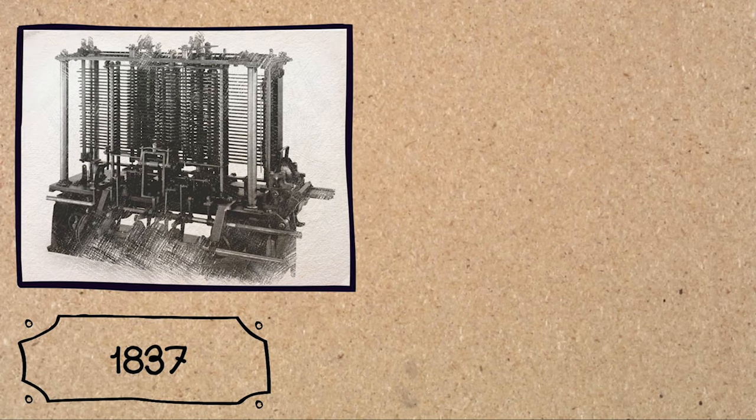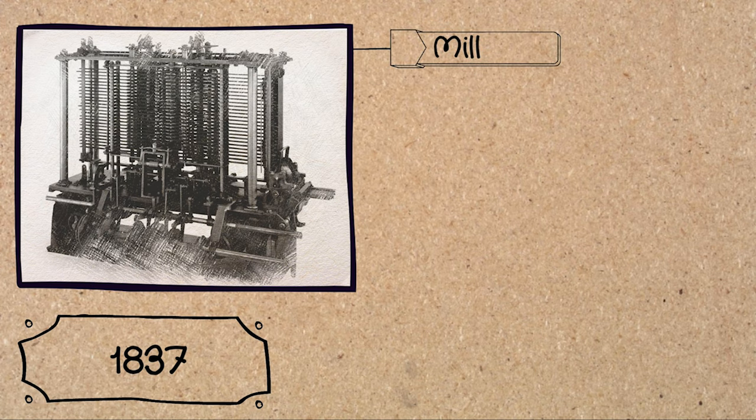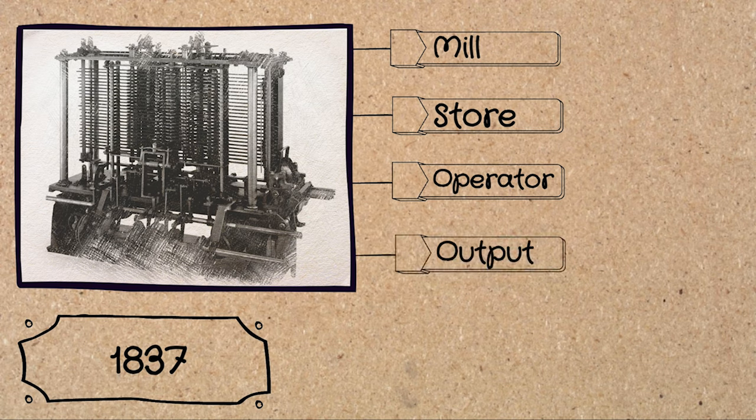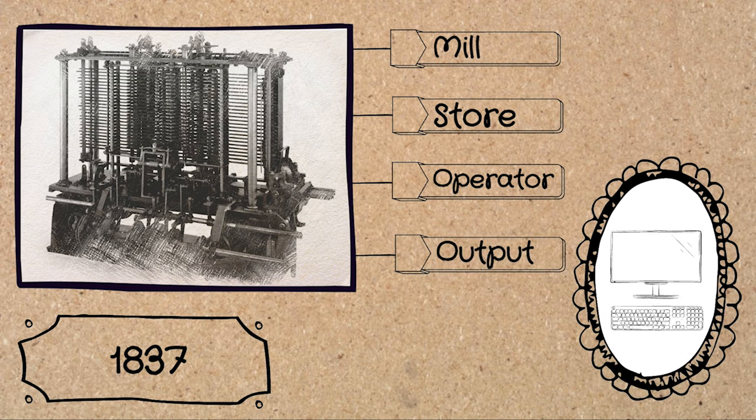Babbage went further and designed an analytical engine in 1837, which he never built, but it included parts — mill, store, operator, and output — that mirror those of modern day computers.